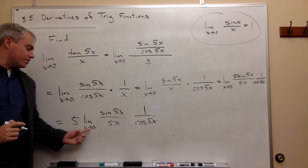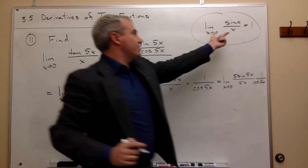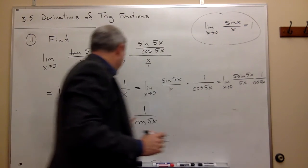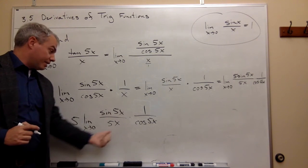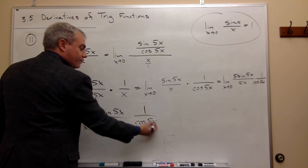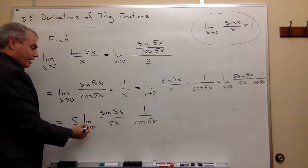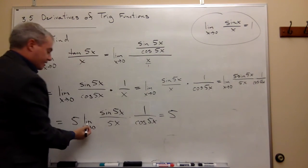Now, we have the limit as x goes to 0 of sine of 5x over 5x. Well, that's exactly in this form. So this limit of sine of 5x over 5x, that limit is 1. And as x goes to 0, cosine of 0 is 1.